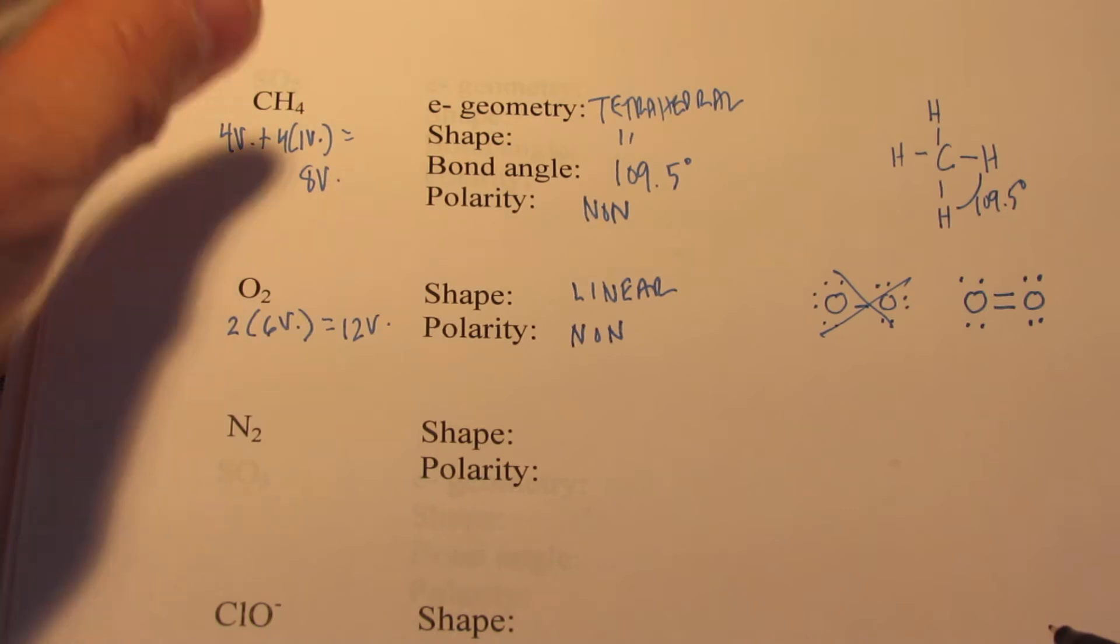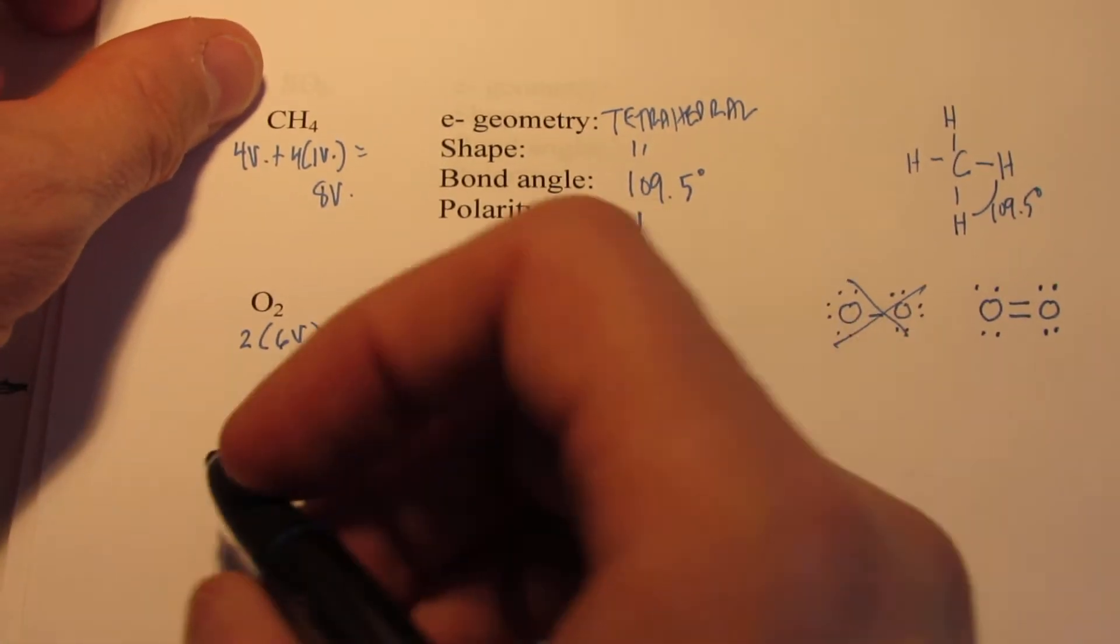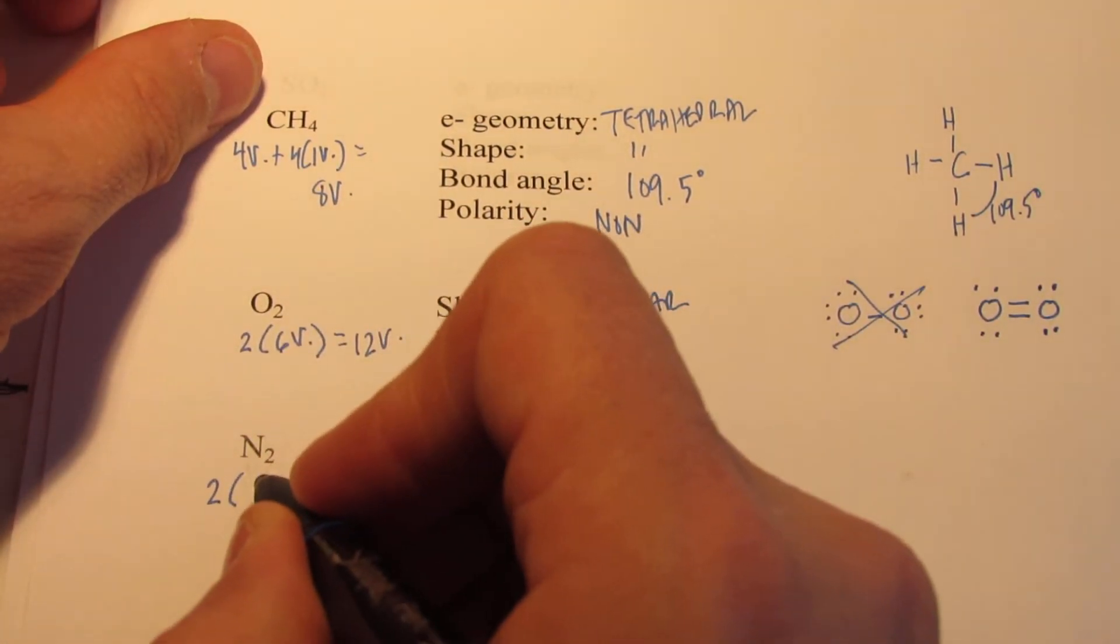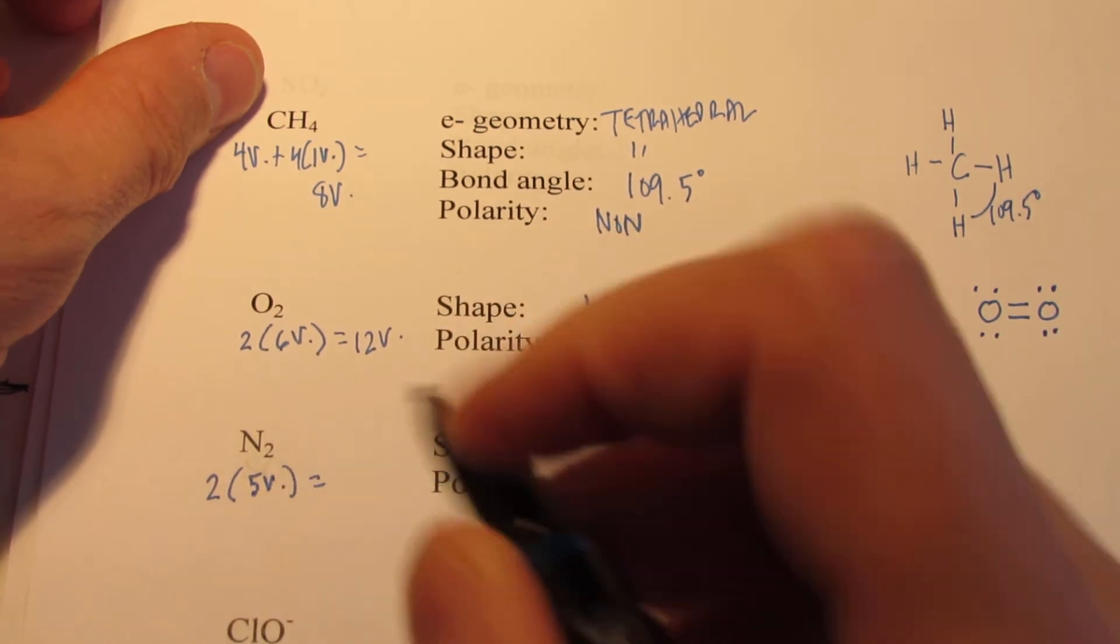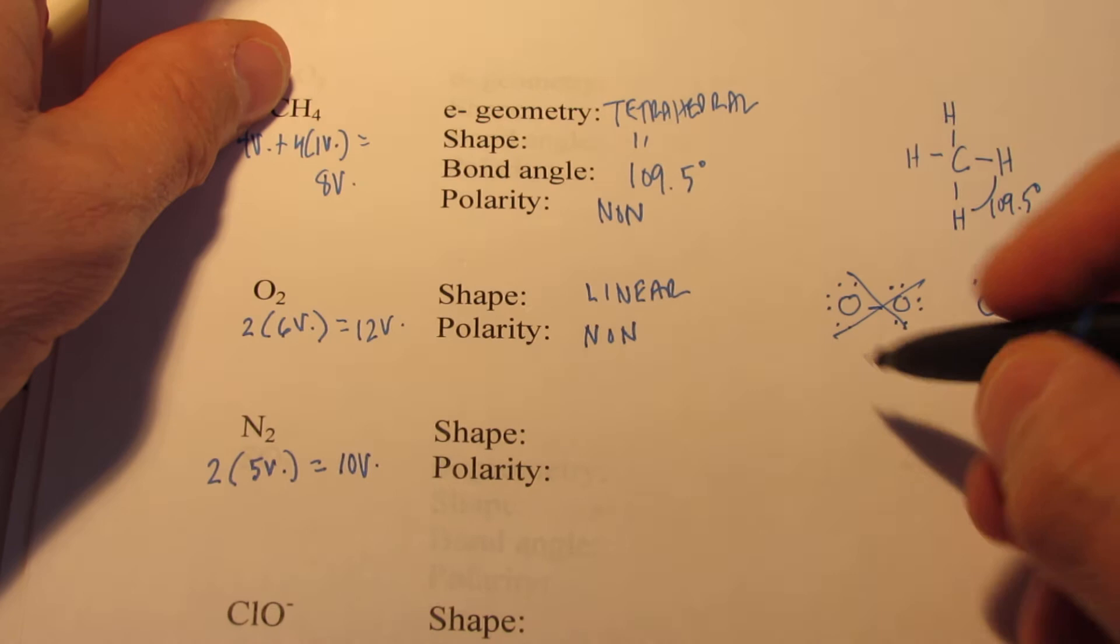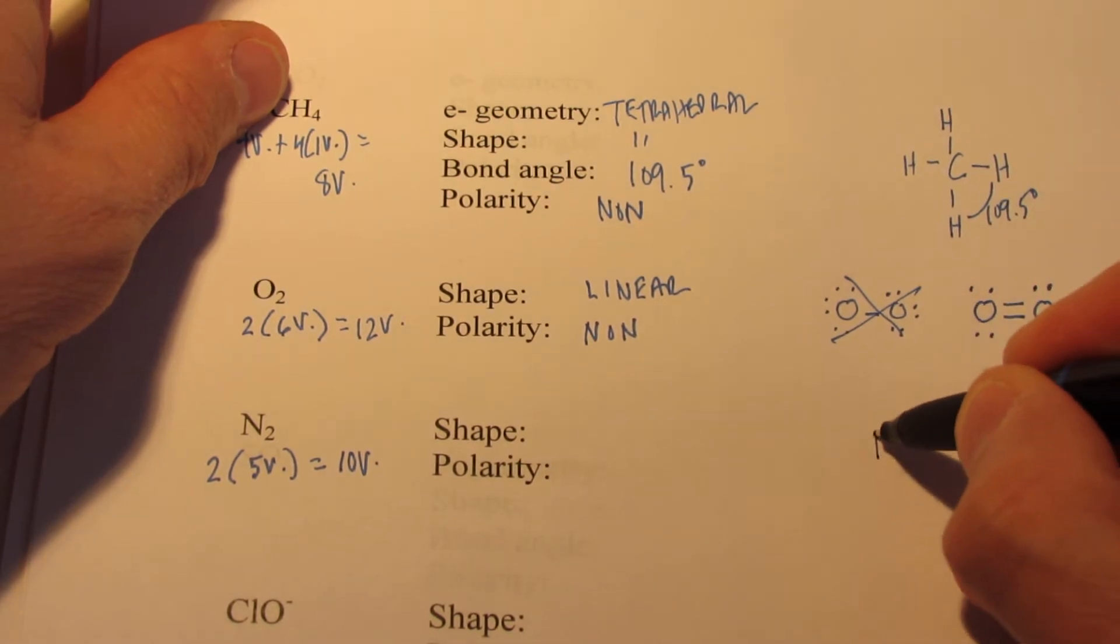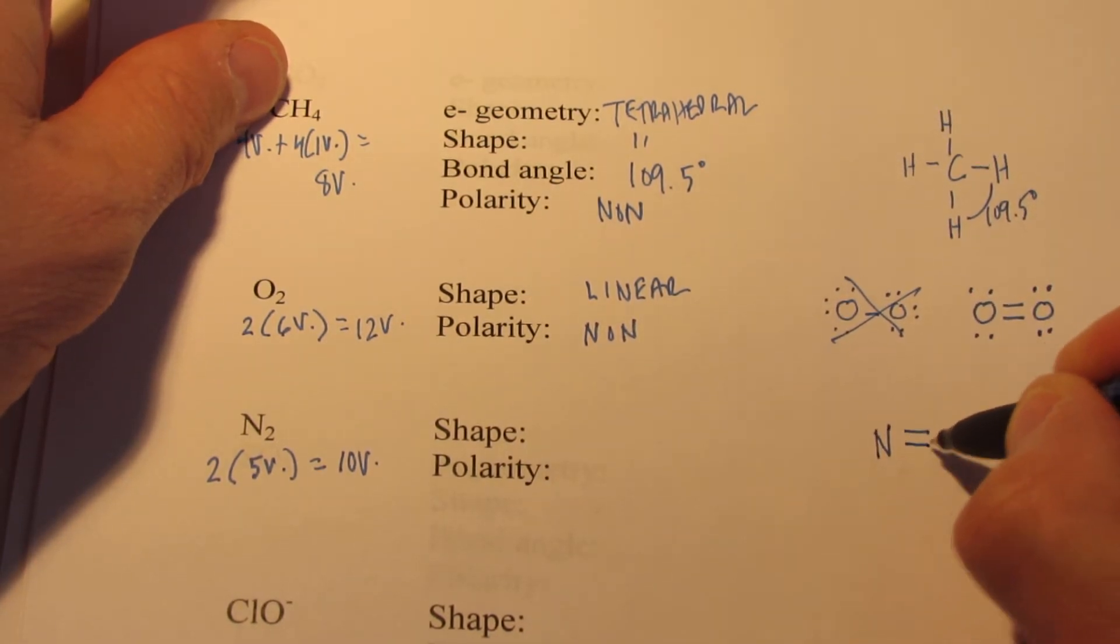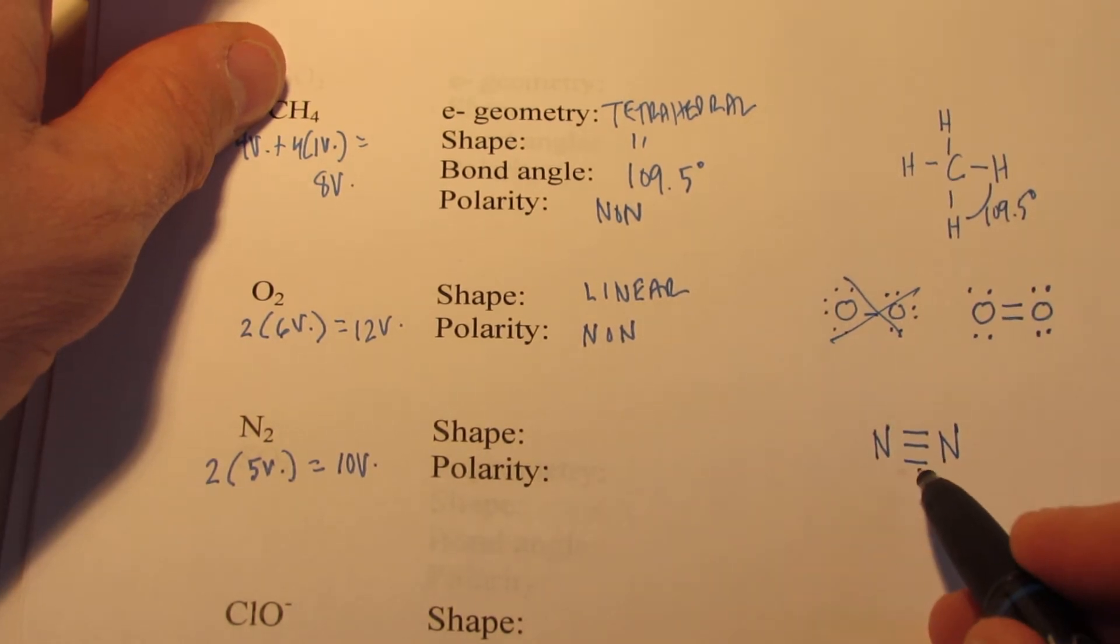Let's do nitrogen quickly. In fact, at any time, feel free to pause the video and try to work on these yourself, and then check your work with my work. We have 10 valence to work with.